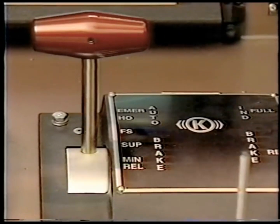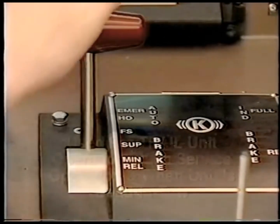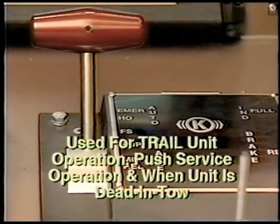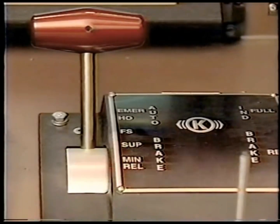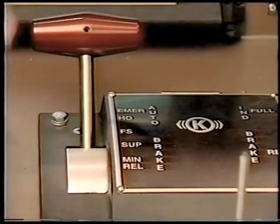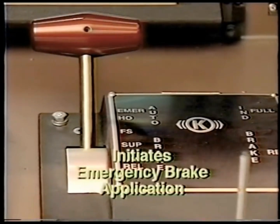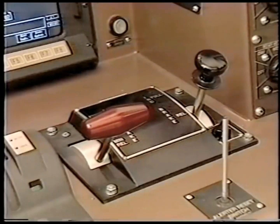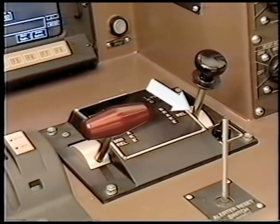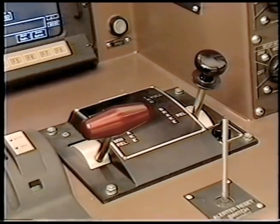The handle off position is for trail unit operation, push service operation, and when the unit is dead in tow. Moving the handle to emergency — the farthest position from the engineer — initiates an emergency brake application.